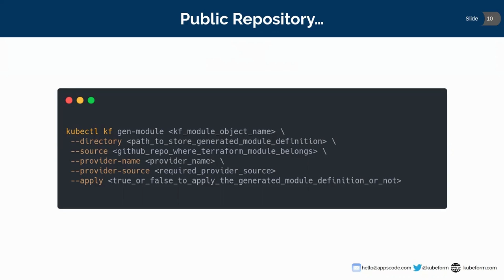You can refer to a public repository as a source. Then you have to give the `provider` name, which is the specific provider — it can be AWS, Google, or other cloud providers currently supported. Then `provider source`, which is the required provider source for that specific provider. There is also another flag called `apply`, which is false by default. You can set it to true or false depending on whether you want to apply the generated module definitions or not. If you give it true, then after generating the module definitions, the QFIRM CLI will also apply it. If false, it will only generate and you can review and apply it later.